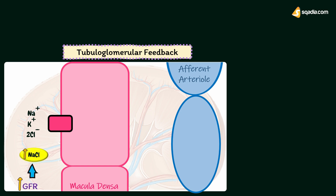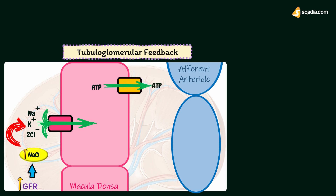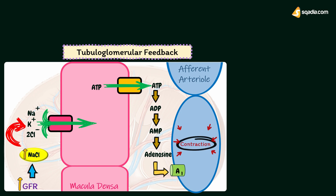When glomerular filtration rate increases, the concentration of sodium chloride increases in the filtrate. Macula densa releases adenosine from ATP. As ATP is released, it converts to ADP, then AMP, and then into adenosine. Adenosine acts on the afferent arteriole through adenosine A1 receptors, causing constriction of the afferent arteriole, so blood flow through the glomeruli decreases, leading to a decrease in glomerular filtration rate.